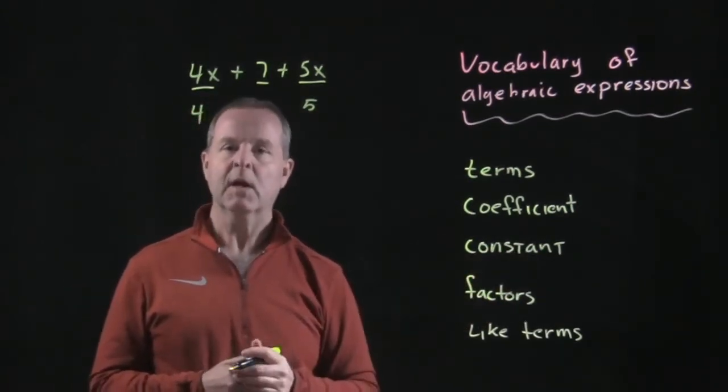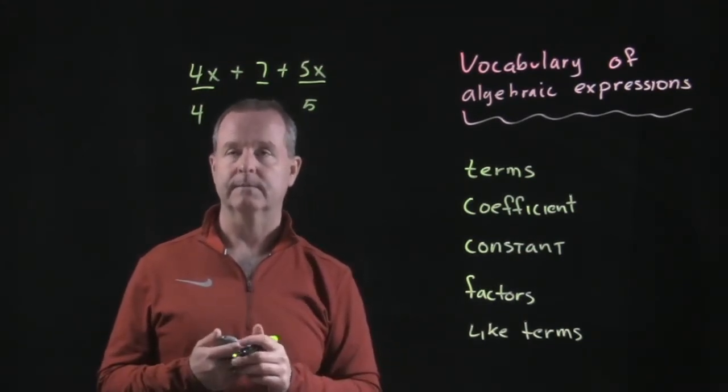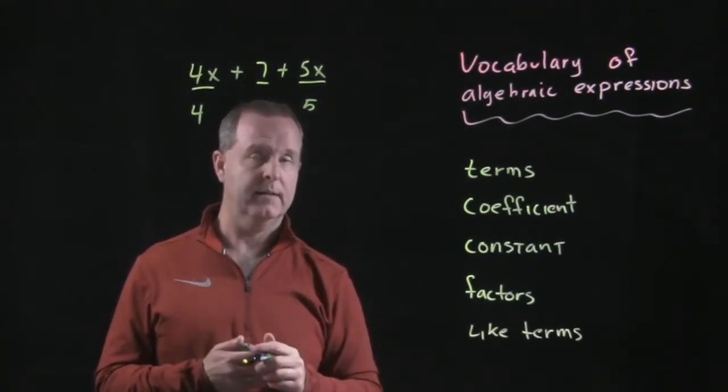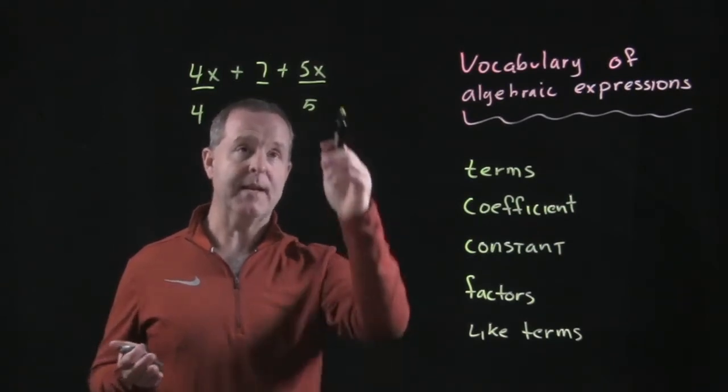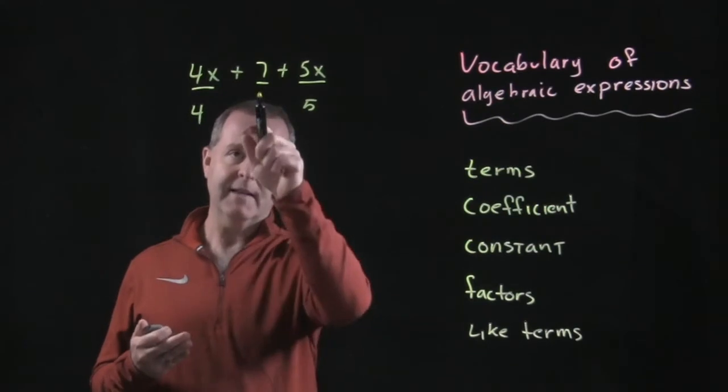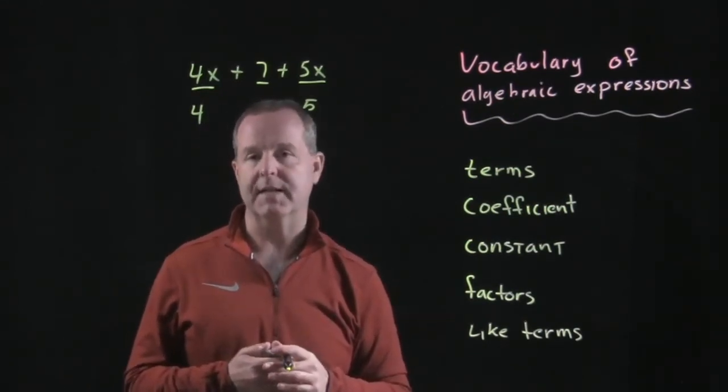Constants. Constants are terms that are not multiplied to a variable. 4x plus 7 plus 5x, there's only one constant. It's the 7. 7 will not change its value depending on what x is. This middle term will always be a 7 regardless. So we call 7 a constant.